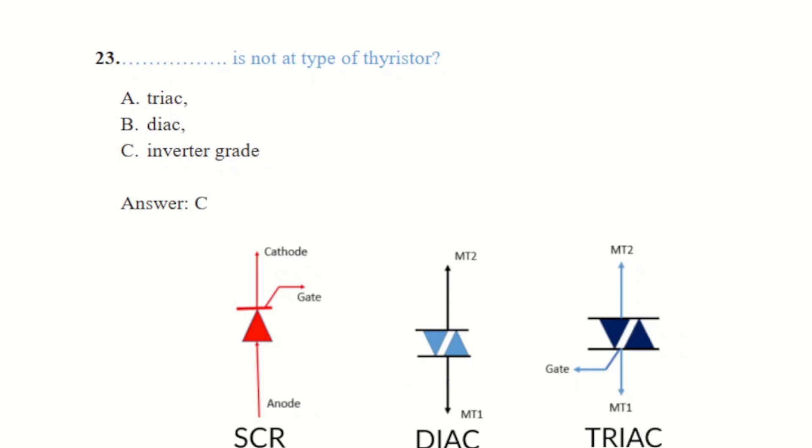SCR, diac and triac. An inverter grade model helps save up to 30% energy consumption while a premium interval inverter model helps save up to 60% energy consumption.